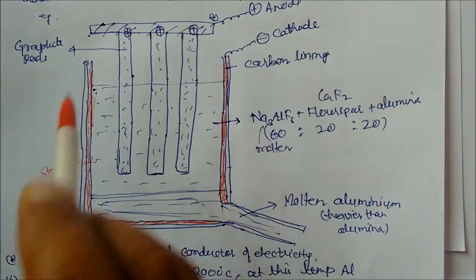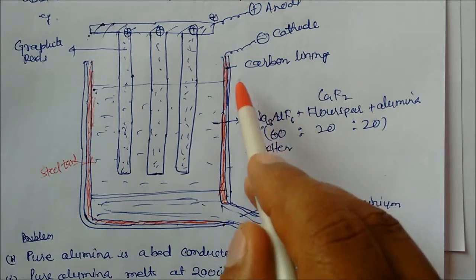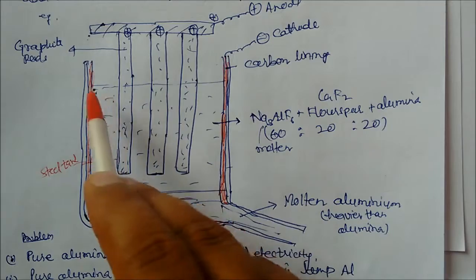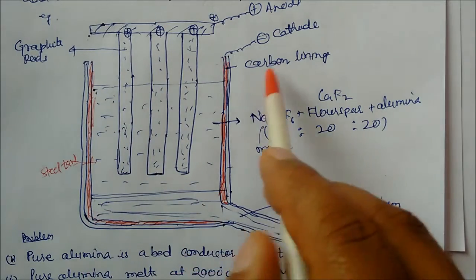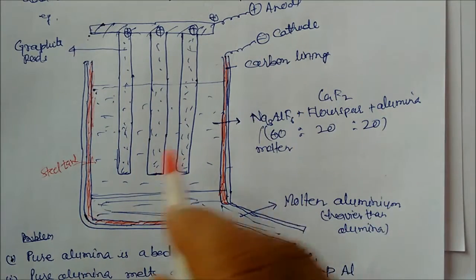This is acting as anode. And this is your cathode negative. And this is red line. You can see this inner part of the lining is actually carbon lining in which cathode is attached.